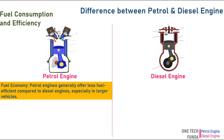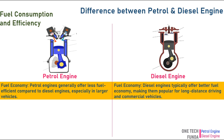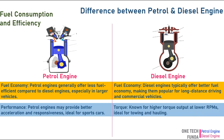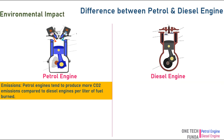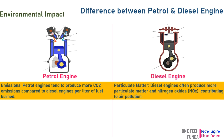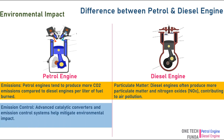Petrol engines generally offer less fuel efficiency compared to diesel engines, especially in larger vehicles. Diesel engines typically offer better fuel economy, making them popular for long-distance driving and commercial vehicles. Petrol engines may provide better acceleration and responsiveness, ideal for sports cars. Diesel engines are known for higher torque output at lower RPMs, making them ideal for towing and hauling. Petrol engines tend to produce more CO2 emissions per liter of fuel burned, while diesel engines often produce more particulate matter and nitrogen oxides (NOx), contributing to air pollution.